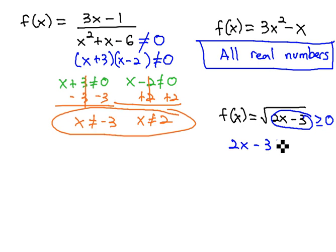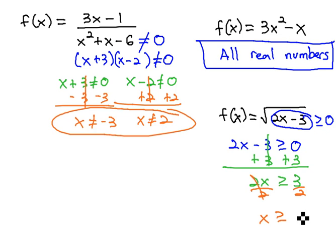So if we know that 2x minus 3 has to be greater than or equal to zero to keep it from being negative, we can solve quickly by adding 3, giving us 2x is greater than or equal to 3, and then finally dividing by 2, giving us x is greater than or equal to 3 halves. This means our domain, or values we can plug in for x in this function, have to be values greater than or equal to 3 halves to make the function defined.